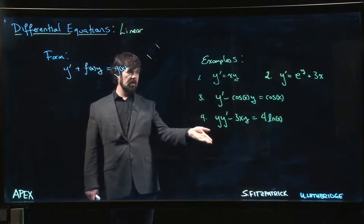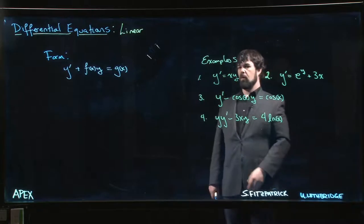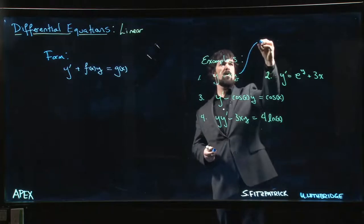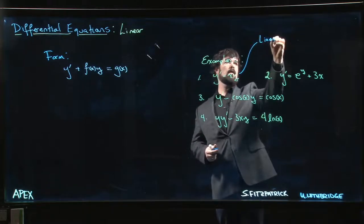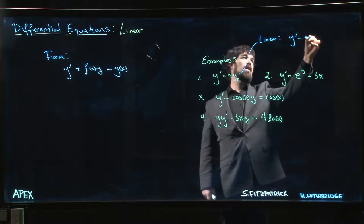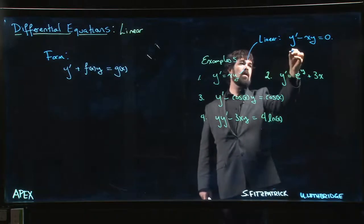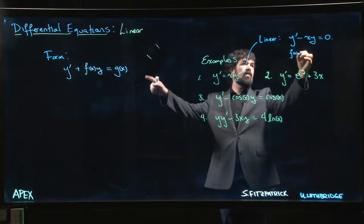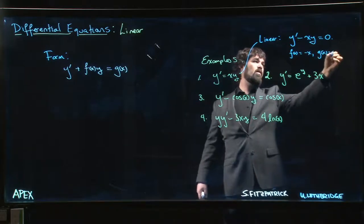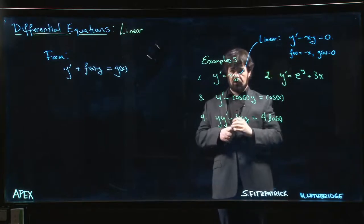Here's some examples. We're going to look at these and try to decide: is it linear or not? This first one here is linear because I can write it in the form y prime minus x times y is equal to zero. I've got my f of x is minus x, my g of x is zero, and because g of x is equal to zero, it's also separable.